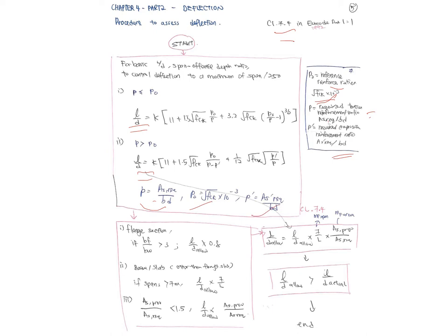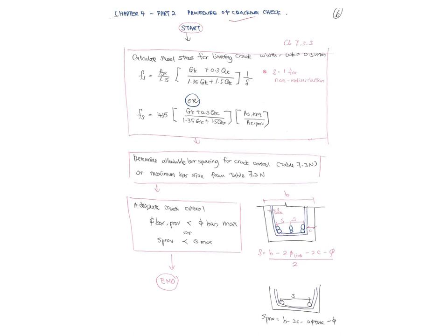If ρ < ρ₀ use the first L/d equation; if ρ ≥ ρ₀ use the second. For flanged sections where bf/bw > 3, multiply L/d allowed by 0.8. For beams and slabs other than flanged slabs with span > 7 m, multiply L/d allowed by 7/L. Also apply the modification factor As,provided / As,required, capped at 1.5. Check that d_allowed ≥ d_actual and L/d allowed ≥ L/d actual.